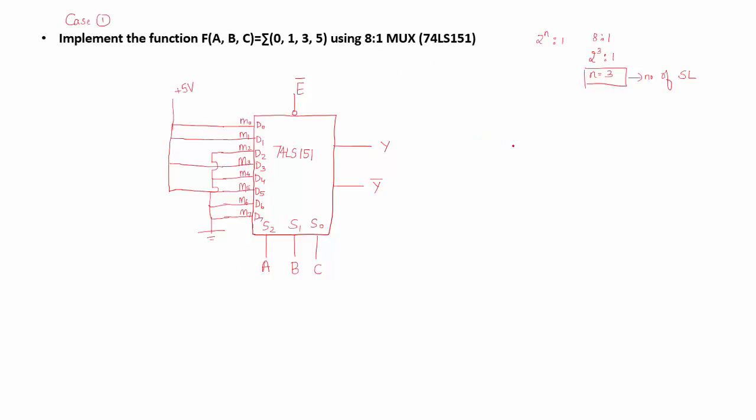If you want to cross verify it, you can construct the truth table. A, B, C are your select lines and Y is your output.